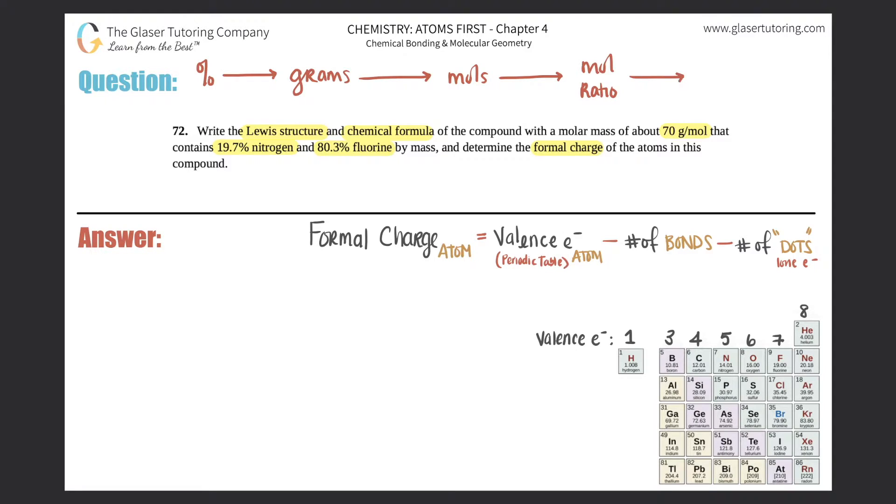From there you can turn it into your empirical formula, and if need be you can finally get your molecular formula. So this is a five-step process, but it's very simple as long as you memorize this progression.